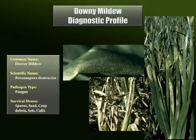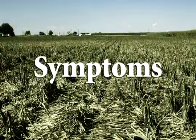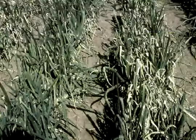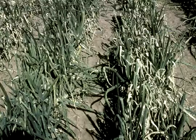Onion downy mildew is caused by the fungal pathogen Peronospora destructor. Let us review the range of symptoms and signs associated with outbreaks of this pathogen.